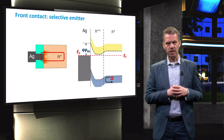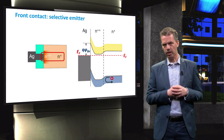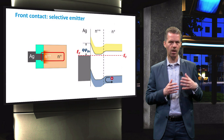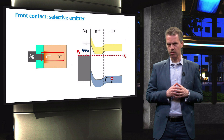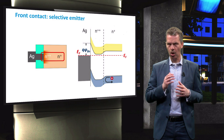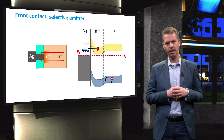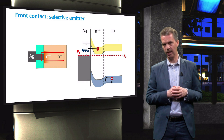This effect becomes clear when we look at the energy band diagram of the metal-semiconductor Schottky barrier. By increasing the doping concentration below the contact, holes are repelled while electrons can still tunnel through the barrier and be collected.